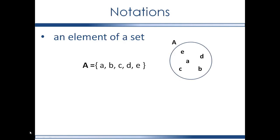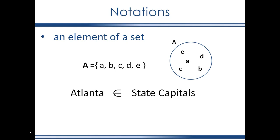An element of a set. Say that little a is an element of the set big A, represented two ways here, with the curly bracket notation and depicted with a picture. This symbol indicates that something is an element of a particular set. Little a is an element of set big A. Atlanta is an element of the set of state capitals. However, Chicago is not an element of the set of state capitals, and this notation is used to indicate that something is not an element of a set.